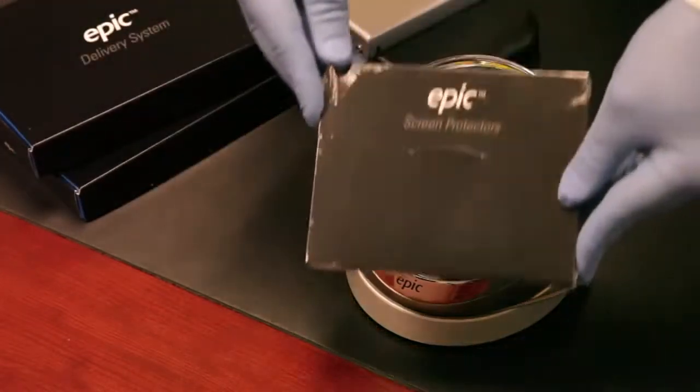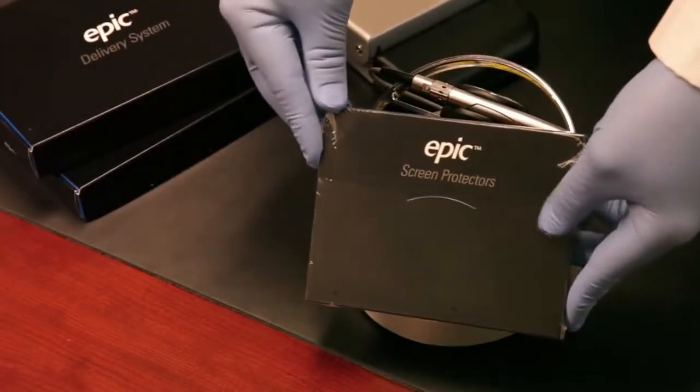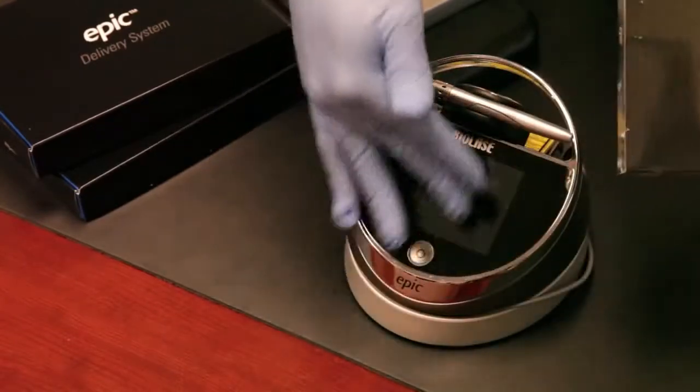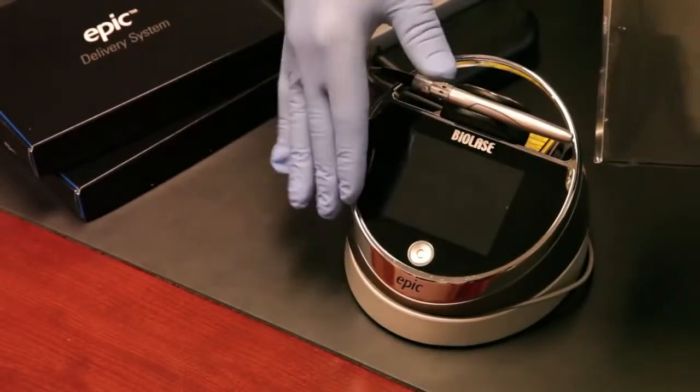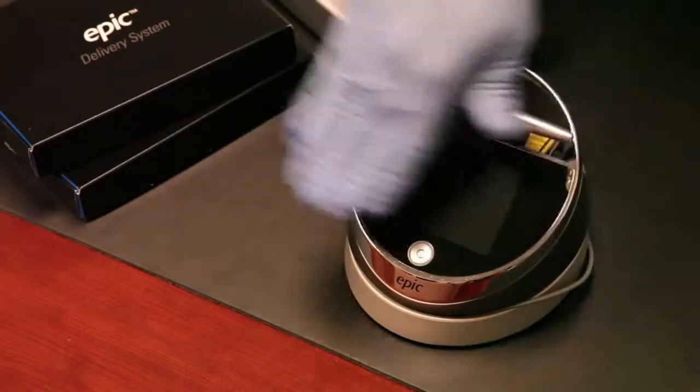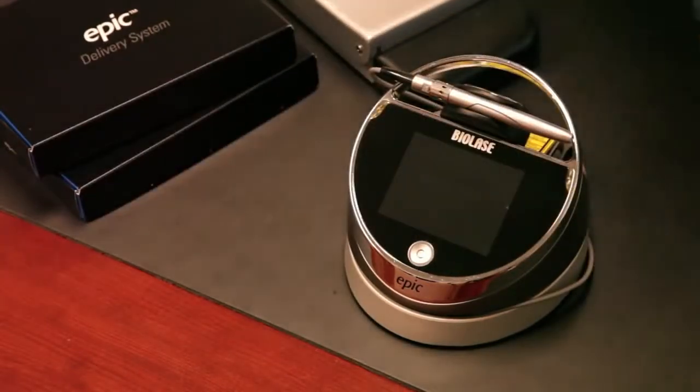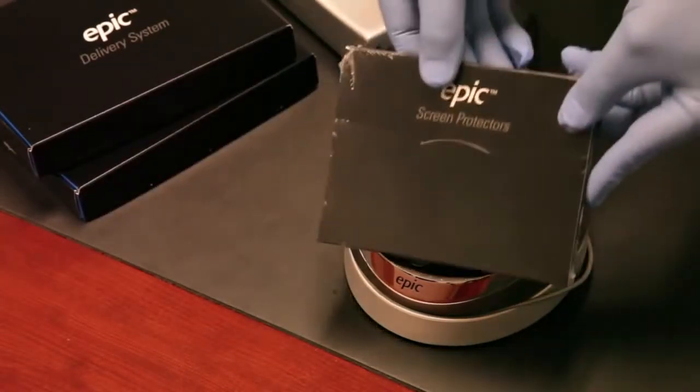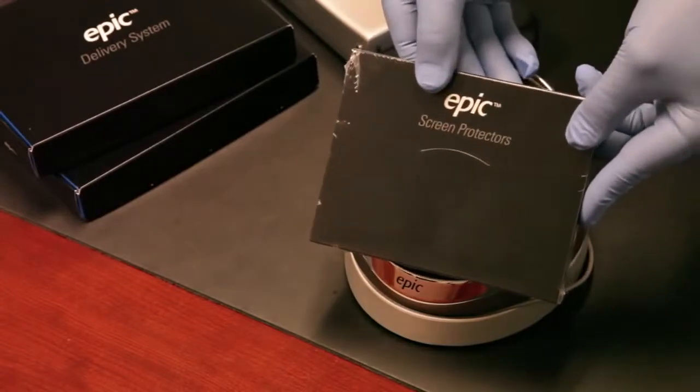With the basic Epic package you also receive a box of screen protectors. There's 30 of these in the box. You basically apply one to the front of the laser, and when you're done with the procedure you peel it off and throw it away, then simply wipe down with an alcohol wipe. These are very handy and we recommend using them with the laser.